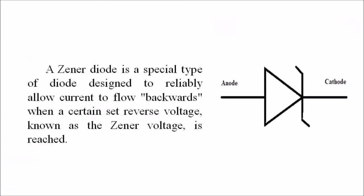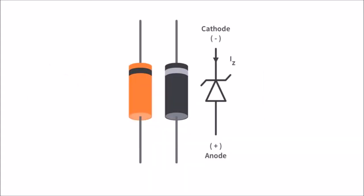A Zener diode is a specially designed diode that predominantly works in the reverse biased condition. They are more heavily doped than ordinary diodes, due to which they have a narrow depletion region.